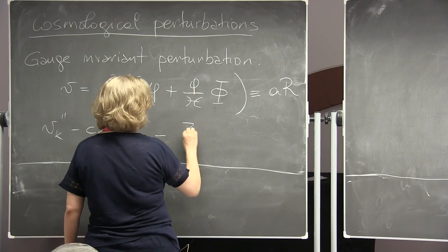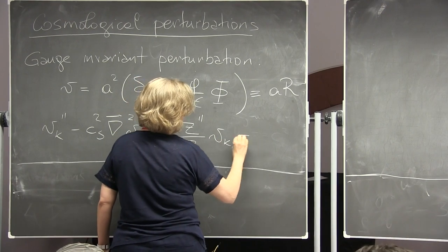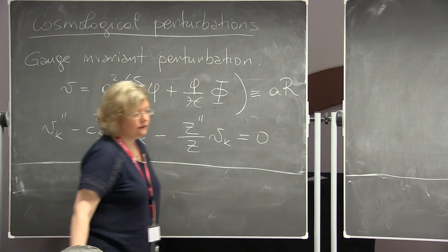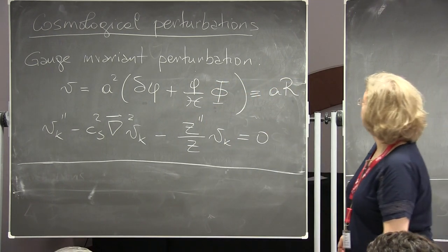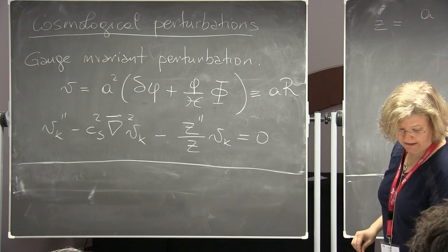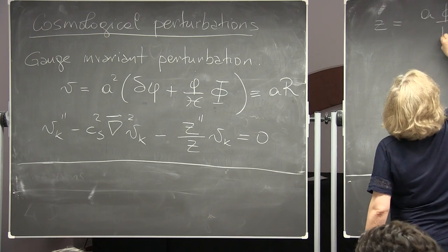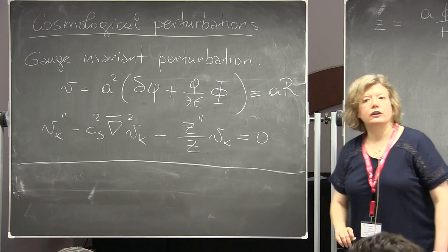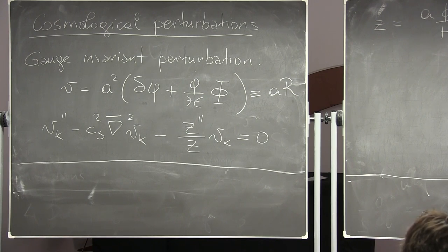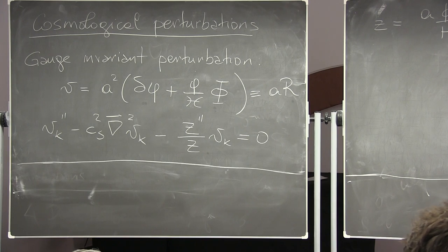Instead of having a double prime over a, you have z double prime over z, where z is a variable that takes into account everything. You can define the z variable to be the scale factor — the same as we had yesterday — but then you can add phi dot over H. When you derive z, if phi dot and H are constant, this gives exactly the equation from yesterday. Of course H and phi dot are not exactly constant; they deviate from constant by something related to the slow-roll condition we saw yesterday. So z is the same as the variable a, up to corrections which go like the slow-roll parameters.